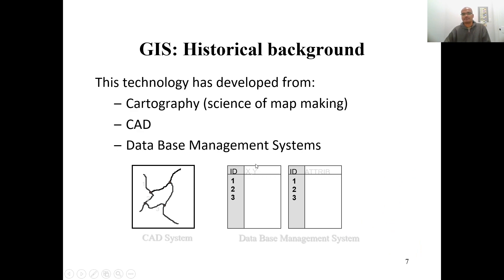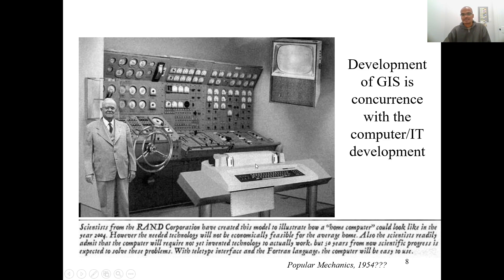Historically, GIS developed from cartography — the science of map-making — along with computer-assisted design systems (CAD) and database management systems (DBMS). This reflects the successive historical and technological development of GIS: starting from cartography, which became digital cartography with the help of CAD, then evolving into GIS. The development of GIS is highly concurrent with the evolution of computers and IT, so any technological advancements in those sectors heavily impact GIS.